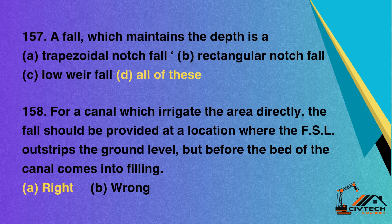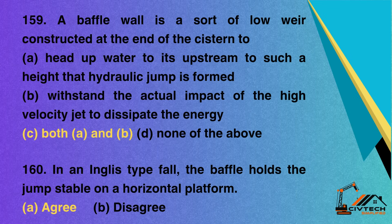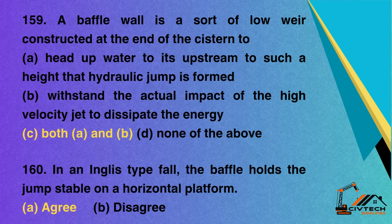Question 158: For a canal which irrigates the area directly, the fall should be provided at a location where the FSL outstrips the ground level but before the bed of the canal comes into filling — A. Right; B. Wrong. Correct option: A. Right. Question 159: A baffle wall is a sort of low weir constructed at the end of the cistern to — A. Head up water to its upstream to such a height that hydraulic jump is formed; B. Withstand the actual impact of the high-velocity jet to dissipate the energy; C. Both A and B; D. None of the above. Correct option: C. Both A and B. Question 160: In an Inglis type fall, the baffle holds the jump stable on a horizontal platform — A. Agree; B. Disagree. Correct option: A. Agree.